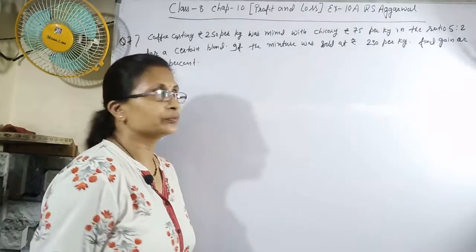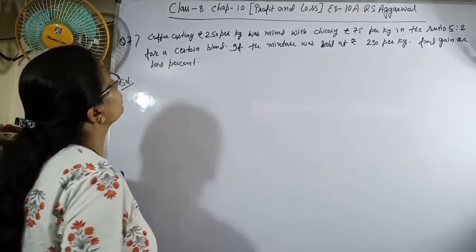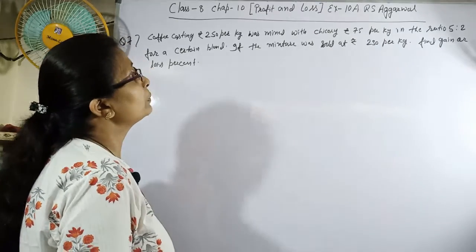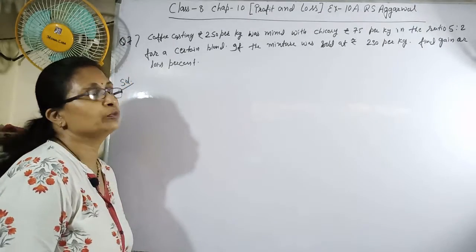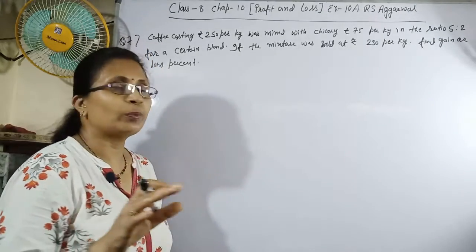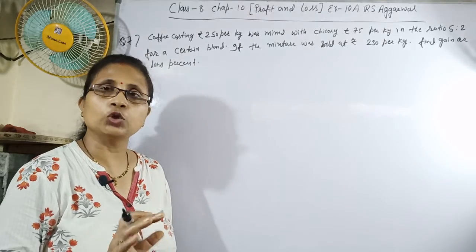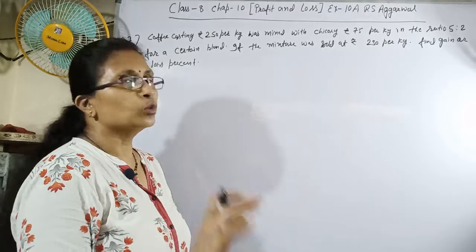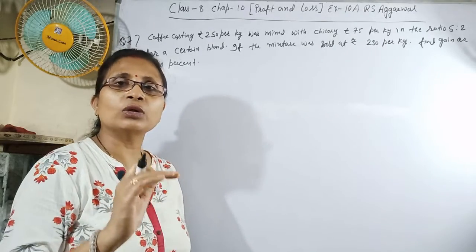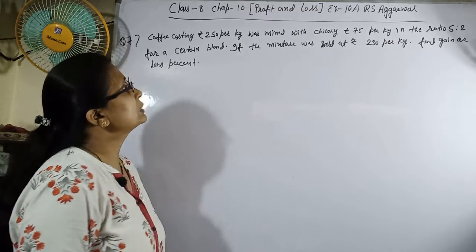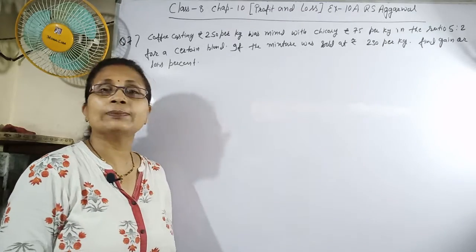The question given is: Coffee costing Rs. 250 per kg was mixed with chicory at Rs. 75 per kg in the ratio of 5 to 2. If the mixture was sold at Rs. 230 per kg,